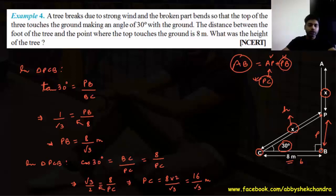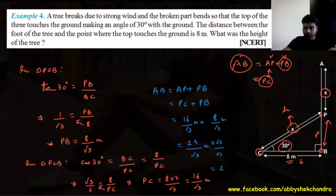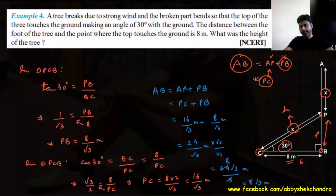AB equals AP plus PB, which is PC plus PB. PC is 16 by root 3 and PB is 8 by root 3 — same denominator, so we add numerators: 24 by root 3. Rationalizing: multiply by root 3 over root 3 gives 24 root 3 by 3, which simplifies to 8 root 3 meters. That is our answer.